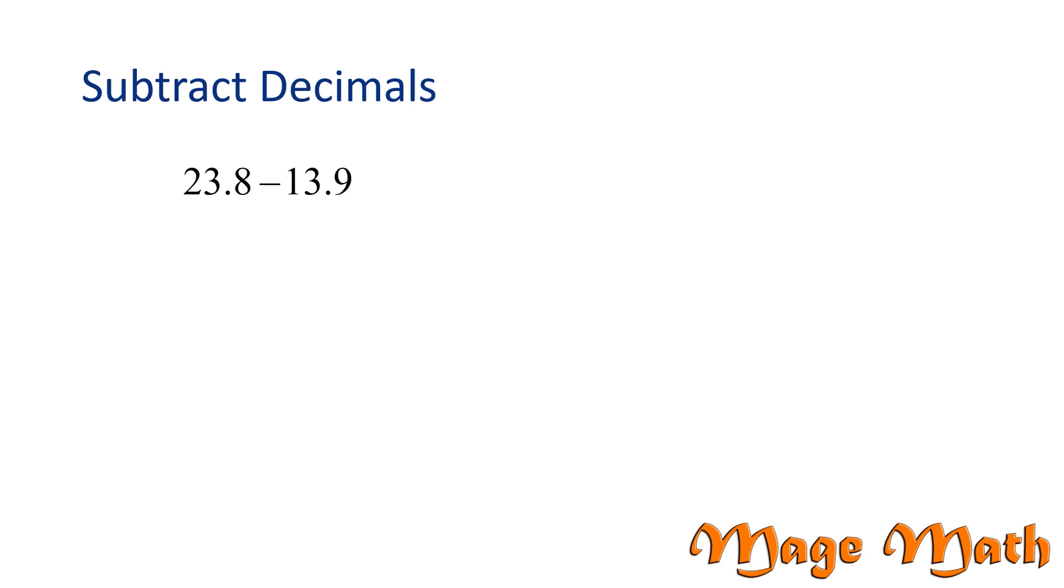Let's try another problem, 23.8 minus 13.9. Just like before, write the numbers vertically and align each place value.